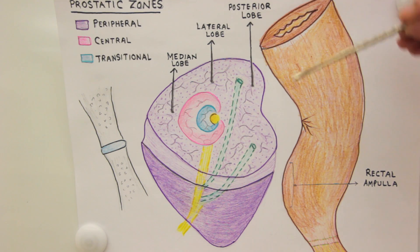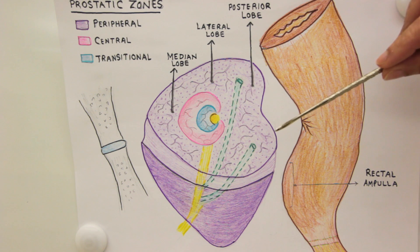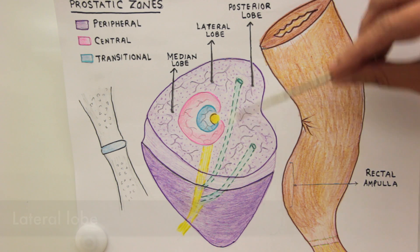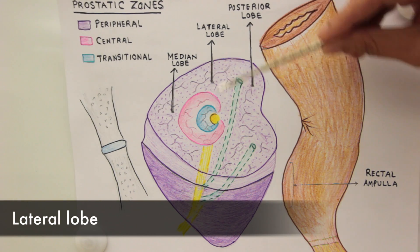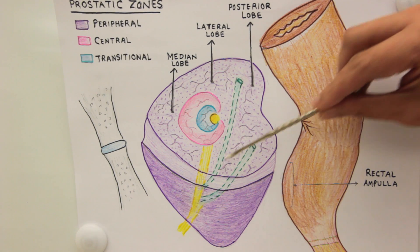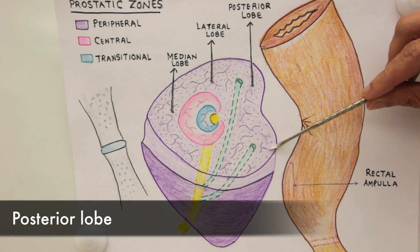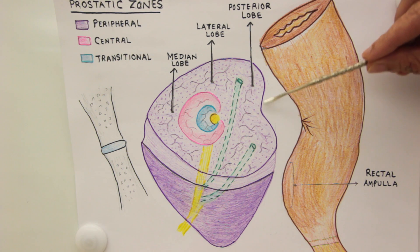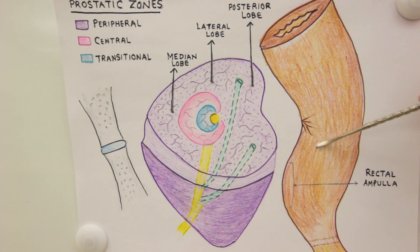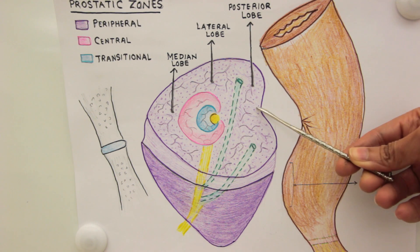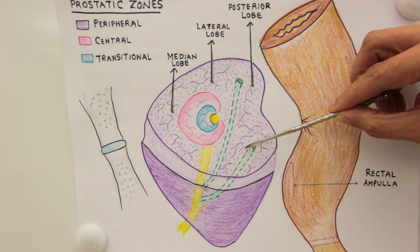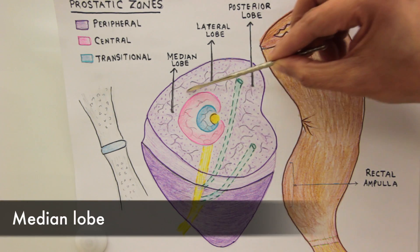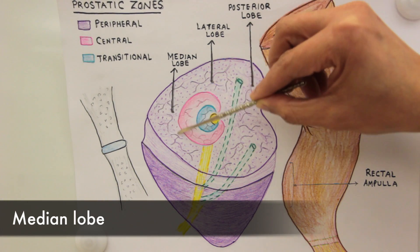Anatomically the gland has been divided into five lobes: right and left lateral lobes, right and left posterior lobes — and remember this is the vertical line of fusion that is palpable through per-rectal examination — and then there is a median lobe present in the midline.